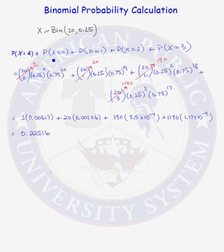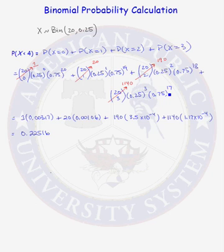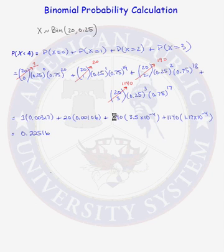Expanding each of these probabilities: the probability that X equals 0 is 20 choose 0, times 0.25 to the 0 power, times 0.75 to the 20th power. The probability that X equals 3 is 20 choose 3, times the probability of success cubed, times the probability of failure to the 17th power. We find that 20 choose 0 equals 1, 20 choose 1 equals 20, 20 choose 2 equals 190, and 20 choose 3 equals 1,140. Multiplying and adding this all out, the probability that X is less than 4 is a little more than 22%.